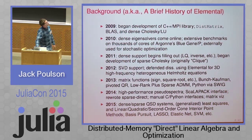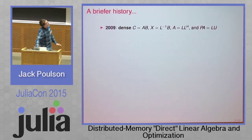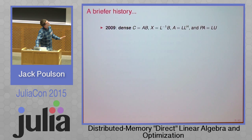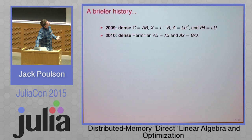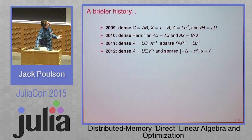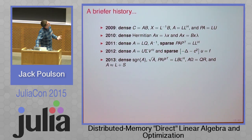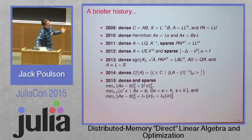In terms of the history of the library: in 2009 there was dense BLAS and dense factorizations; then eigensolvers came along in 2010; a little more sparse linear algebra and SVD followed; then more sophisticated applications like matrix functions, pseudo-spectra, and an interface to ScaLAPACK; and then an explosion of functionality in about the last year.